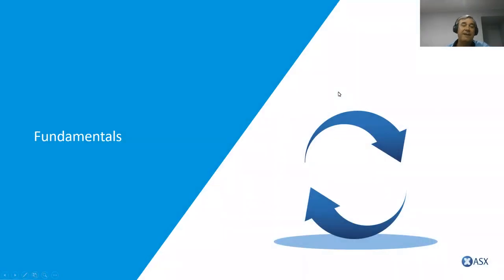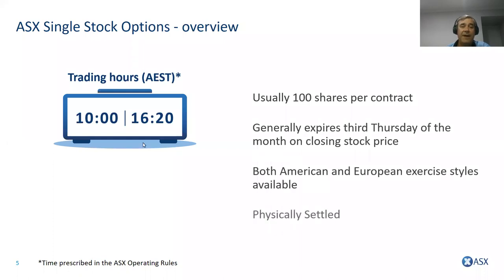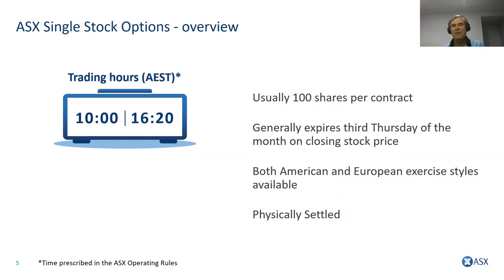Let's touch on fundamentals. For single stock options over individual shares, all options contracts start at 100 shares per contract — so protection is purchased in 100-share increments. Trading hours open in line with the underlying share market around 10 a.m. Australian Eastern time. Options generally expire on the third Thursday of the month. Single stock options expire on the closing price of the stock — that 10:10 p.m. price is used to determine expiration, but options are allowed to trade up until 4:20 p.m.